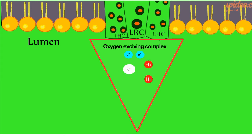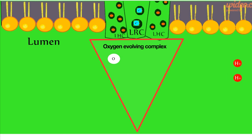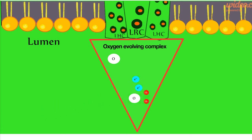An H2O molecule is split. Two electrons travel to the chlorophyll molecules, two hydrogen ions will be displaced in the lumen and will eventually travel to the enzyme ATP synthase, and the oxygen atom will wait for another reaction to happen. When it does, the two oxygen atoms will join creating O2, and be free to exit the stomatal pores of the plant, giving us clean oxygen to breathe.